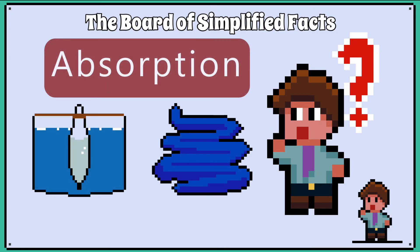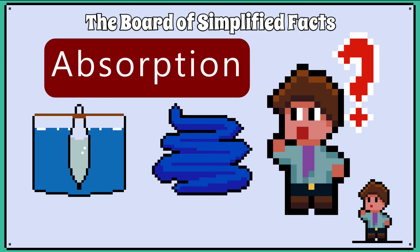In the next lesson we will look at how visking tubing is used as a model for absorption in the small intestine.